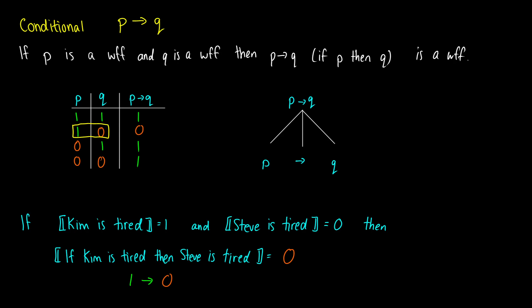There's a special terminology for conditionals. The thing on the left of the arrow is called the antecedent — think of it as the condition. The thing on the right is called the consequent — think of it as the result. If the antecedent is met, then the consequent should follow from that.